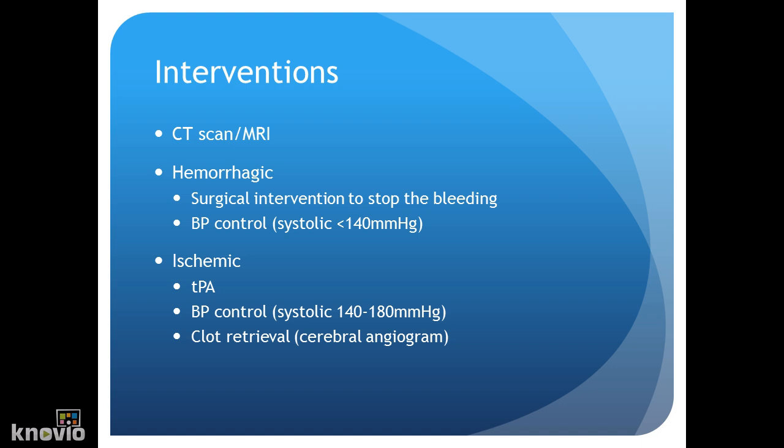When a patient has an ischemic stroke, we want to maintain their systolic blood pressure between 140 and 180 to increase perfusion to the area of the brain that's affected. It's also possible that they'll do a clot retrieval, which is a cerebral angiogram — this is when they go up through the femoral artery and retrieve the clot in the brain.